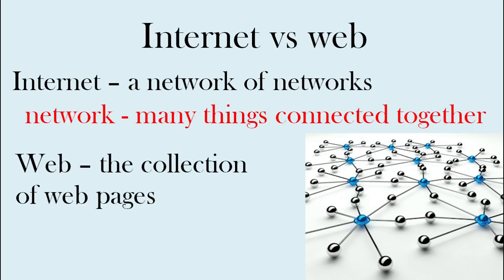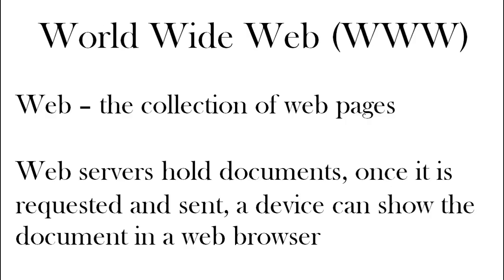You may have heard the terms 'internet' and 'web' — what's the difference? The internet is the network that connects everything together, whereas the web is really the collection of web pages and documents that you see. Web servers hold documents; once they're requested, they're sent, and a device such as your computer or phone will show the document in a web browser.